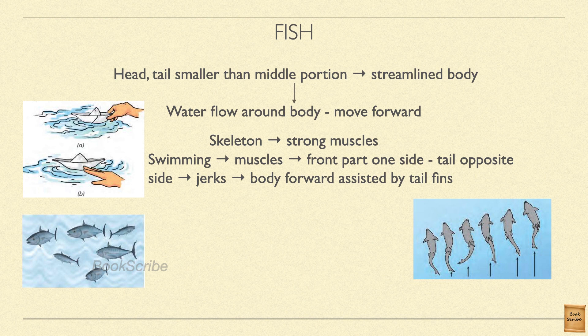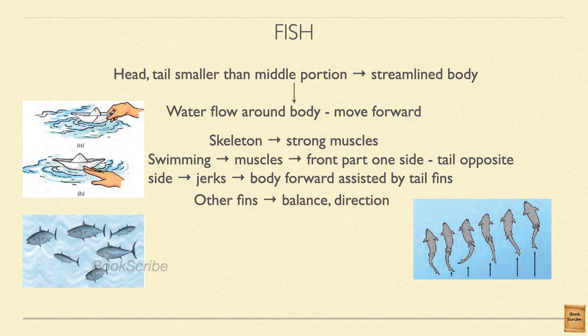Each time the fish tilts from side to side, there will be a jerk — a shake in the body — and this causes a forward movement. Multiple jerks keep the fish moving forward. The fins near the tail will also be flapping to help. Other fins near the head and body help balance the fish in the water and also help in direction — for example, turning left or to any direction.